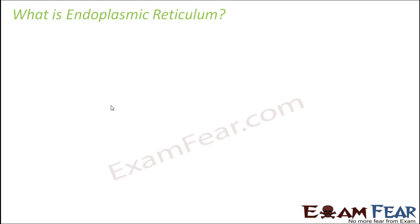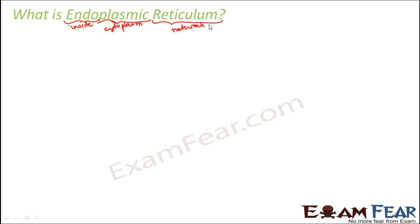So what is endoplasmic reticulum, and what does this term mean? Endo means inside, plasmic is related to the cytoplasm, and reticulum means network. So basically it is a network of something which is present inside the cytoplasm.